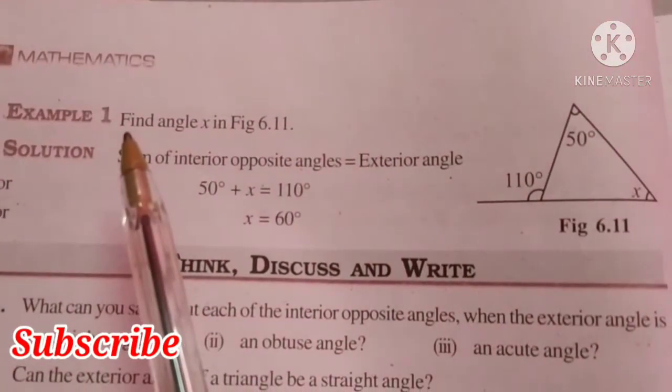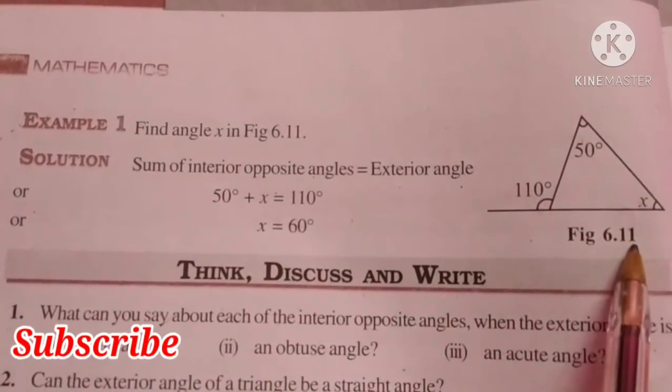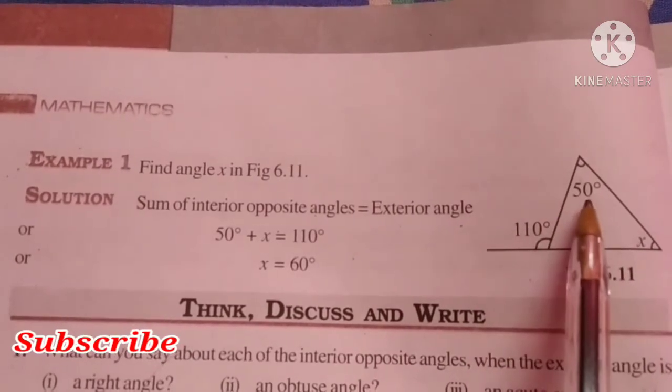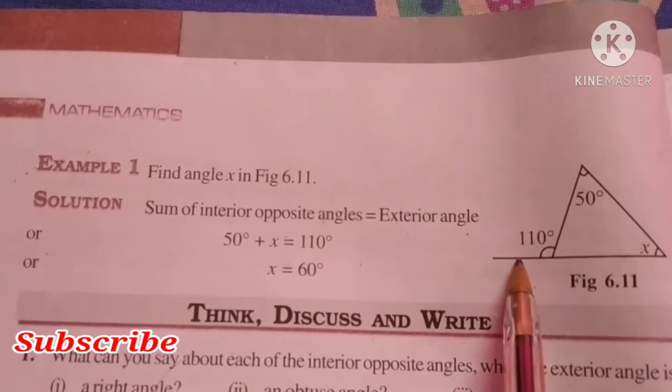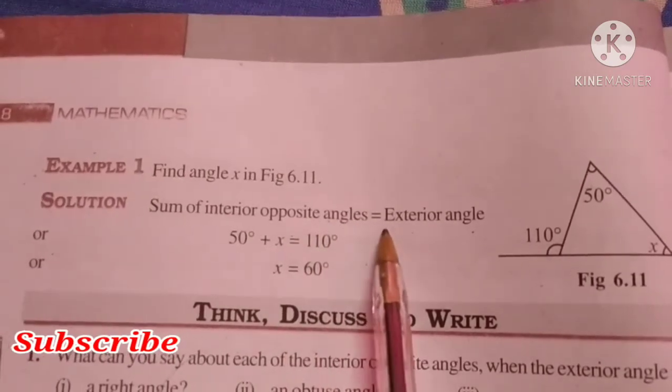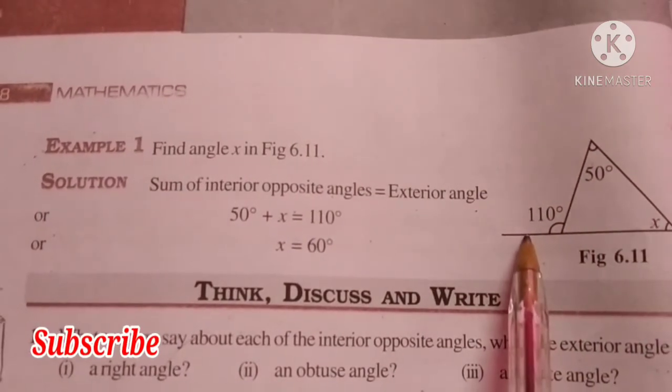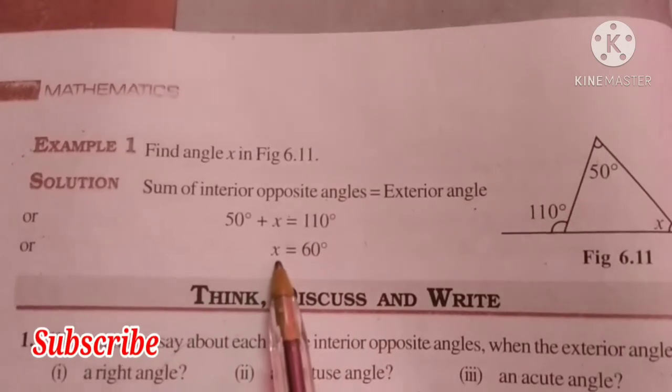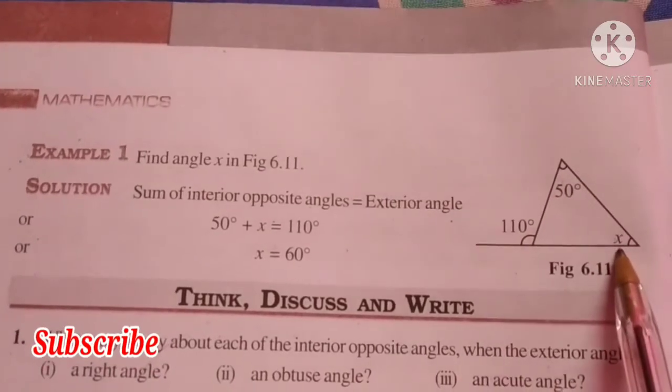Let us go to example 1. Find angle X in figure 6.11. Here X angle is given. We have to find this angle. Here one interior angle is given as 50 degrees and the exterior angle is 110 degrees. So we studied the property: sum of interior opposite angles is equal to exterior angle. So 50 plus X is equal to 110 degrees. We will transpose this 50 to RHS, so we will get X is equal to 60 degrees. So its measurement is 60 degrees.